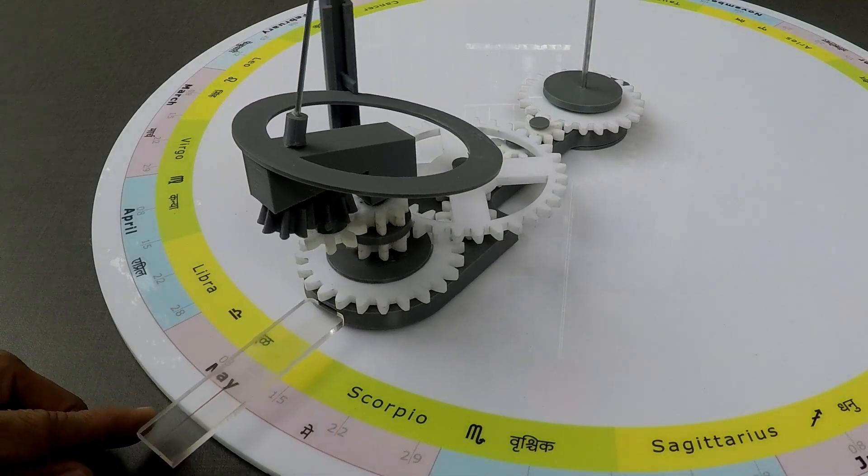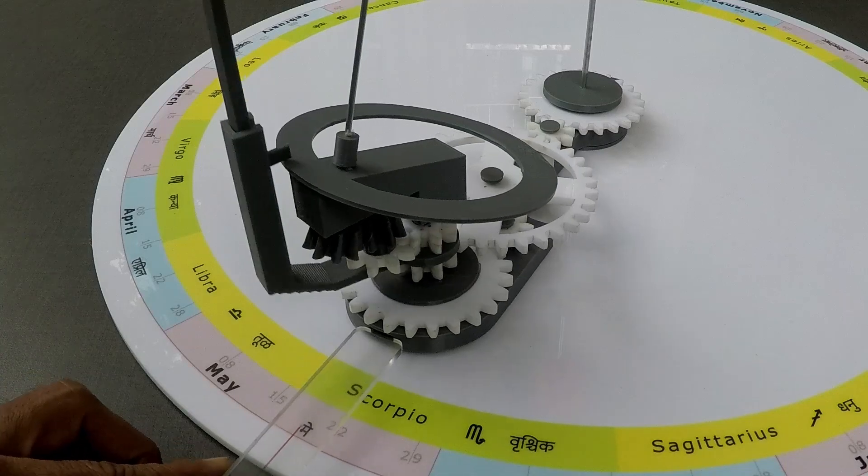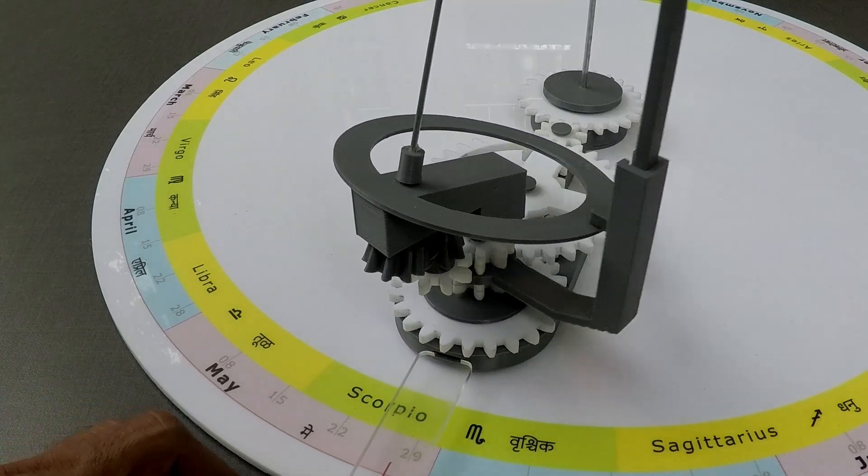Moon's orbit is tilted at an angle of 15 degrees, while in reality it is only 5 degrees.